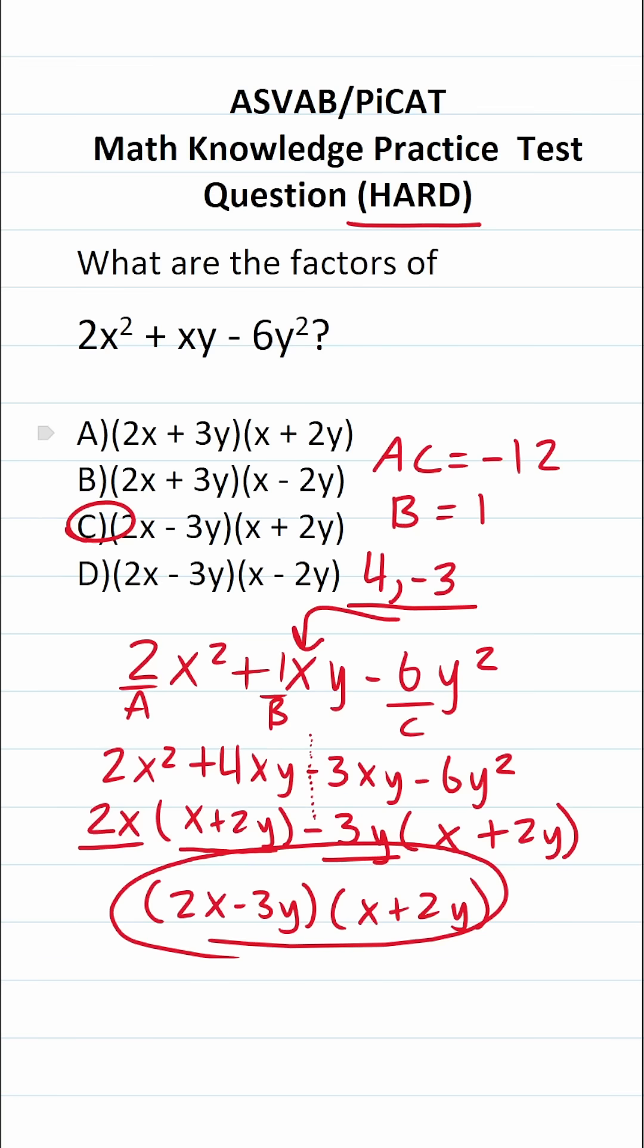Now, instead of factoring by grouping, you could have also multiplied all these answer choices out until you got the right answer. But as you can imagine, that's pretty time-consuming. And once you learn how to factor using the AC method, as well as factoring by grouping, these problems take you less than a minute.